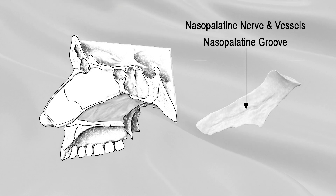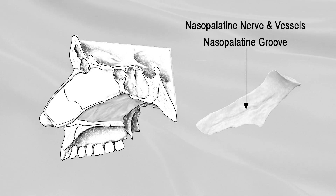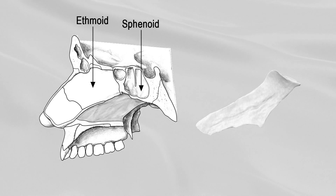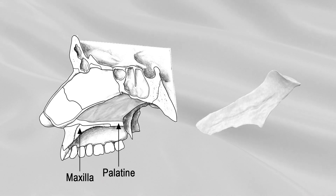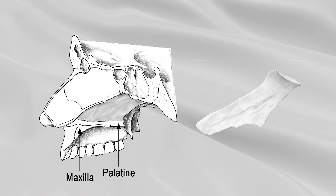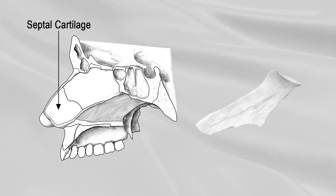The VOMER articulates with six bones: two of the cranium — the sphenoid and ethmoid — and four of the face — the two maxillae and the two palatine bones. It also articulates with the septal cartilage of the nose.